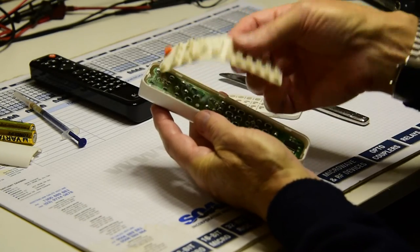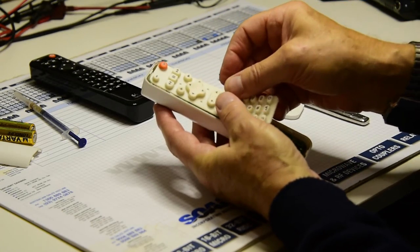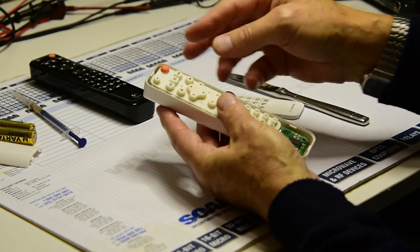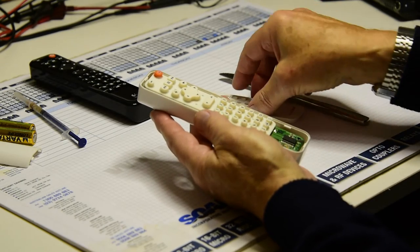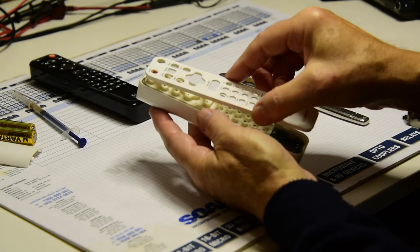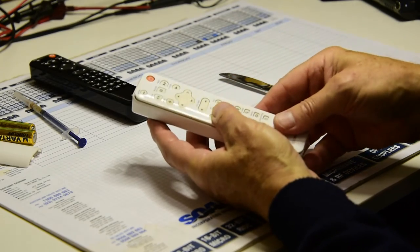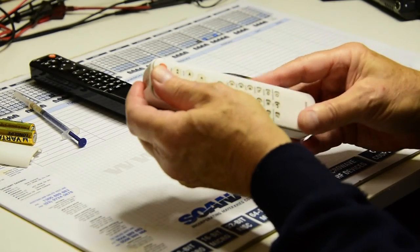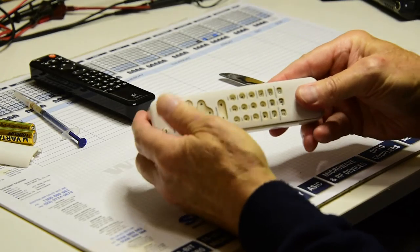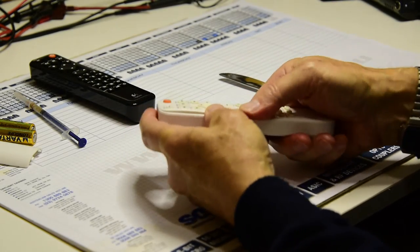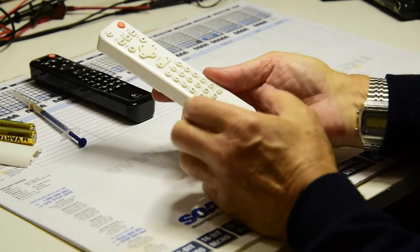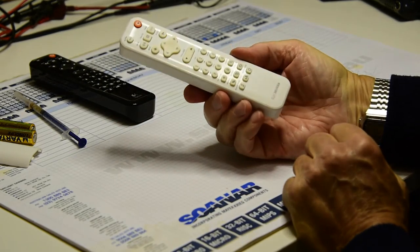Put back the conductive rubber button section. Just position it in the center of the board and then place the top cover over the buttons. Then you press down at the top and one side, bottom and the other side and just click it all into place and voila, there it is back together.